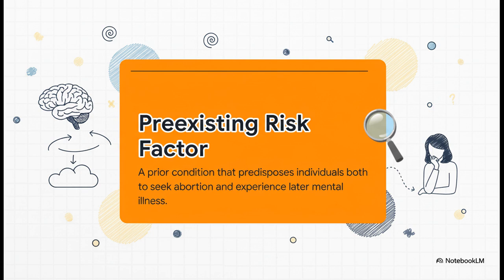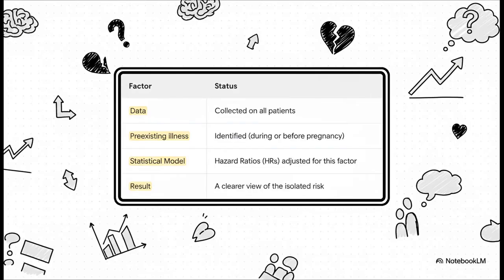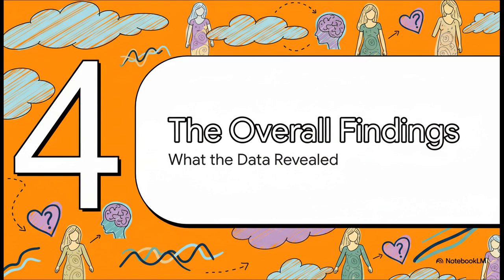Essentially, it's something that could be muddying the waters. In this case, a pre-existing mental health condition is a big one. So the million-dollar question for the researchers was, can we peel that away? Can we somehow isolate the risk of the procedure itself? Here's their strategy: First, they flagged every single patient who had a diagnosed mental health issue either before or during their pregnancy. Then, they used pretty sophisticated statistical models to adjust their results, basically to mathematically account for the influence of those prior conditions. What you're left with is a much cleaner look at the associations.